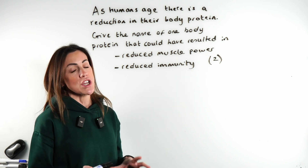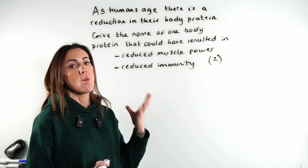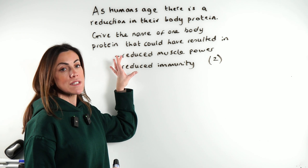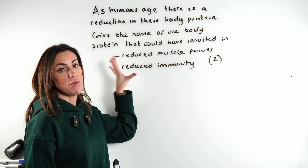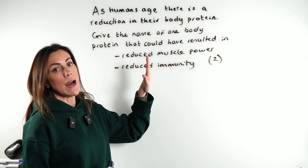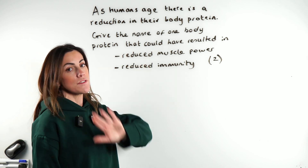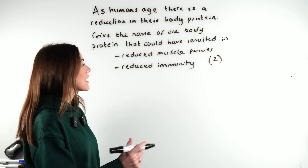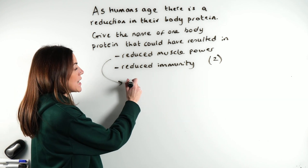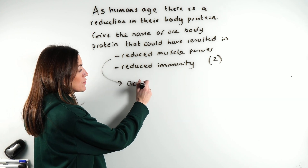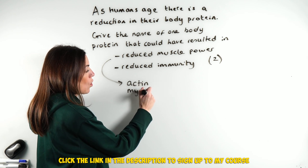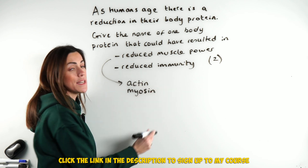To answer the question, you need to remember which types of protein are involved in each of these processes. For reduced muscle power, there are a few options you could give. You could name the proteins actin or myosin.